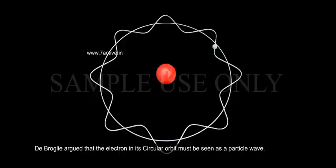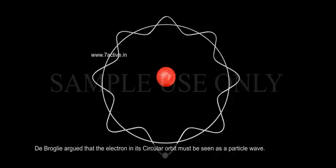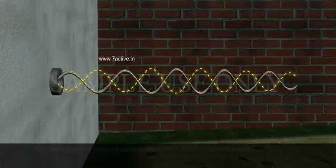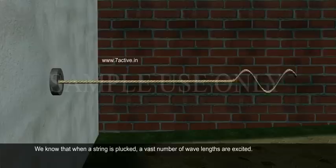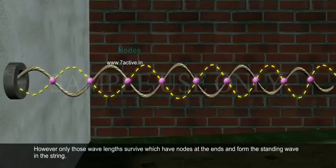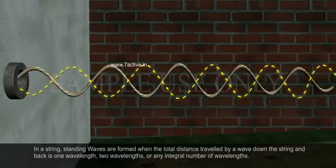De Broglie argued that the electron in its circular orbit must be seen as a particle wave. In analogy to waves travelling on a string, particle waves can lead to standing waves under resonant conditions. We know that when a string is plucked, a vast number of wavelengths are excited. However, only those wavelengths survive which have nodes at the ends and form the standing wave in the string.